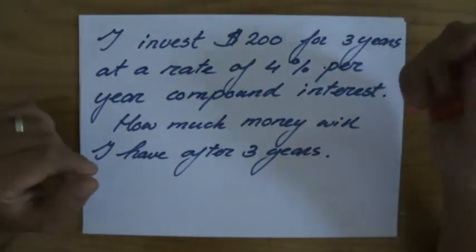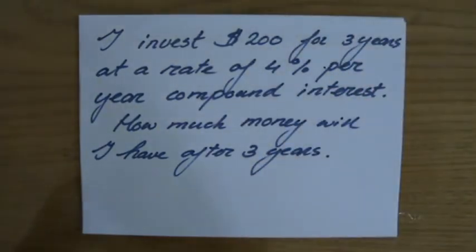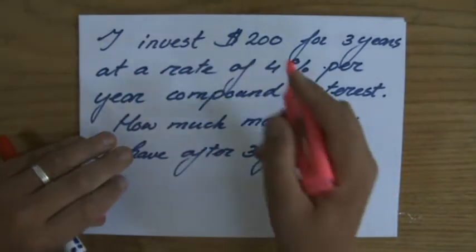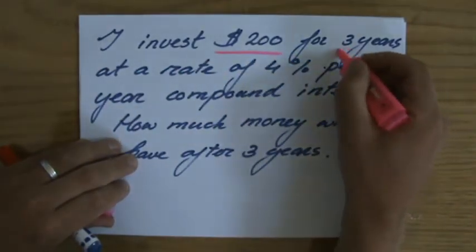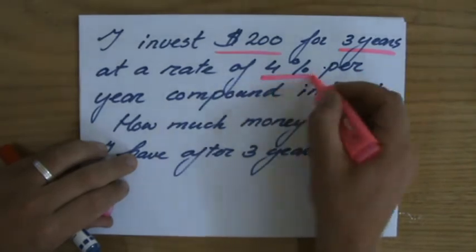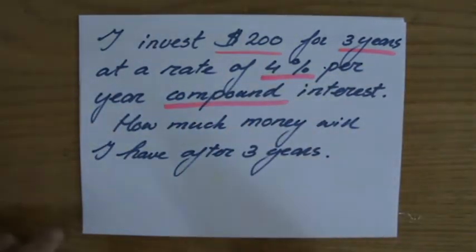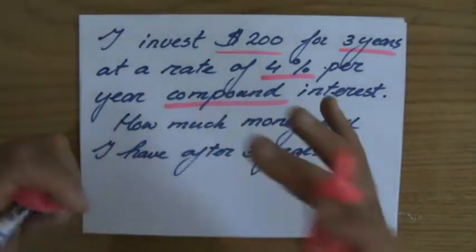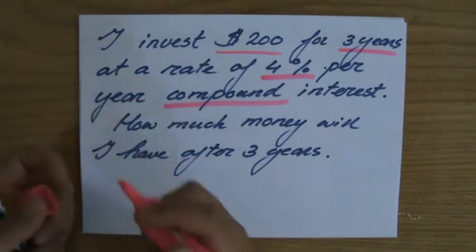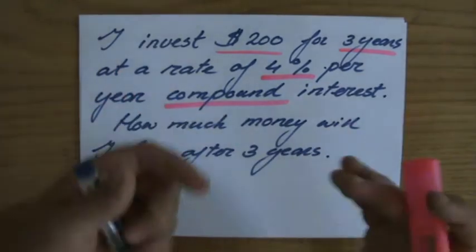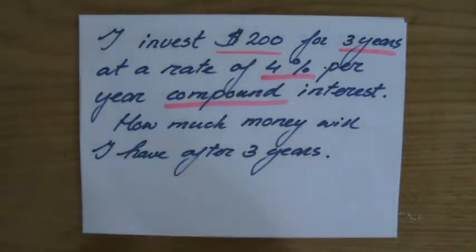I invest $200 for three years at a rate of 4% per year compound interest. That's important information. How much money will I have after those three years? The total amount, not just the interest—how much money will be sitting in my bank account? So, $200 for three years. I'm going to do it relatively quickly and I'm structuring my information: year one, $200.